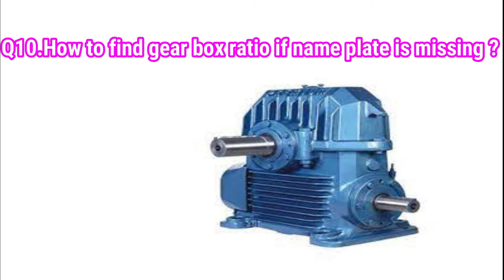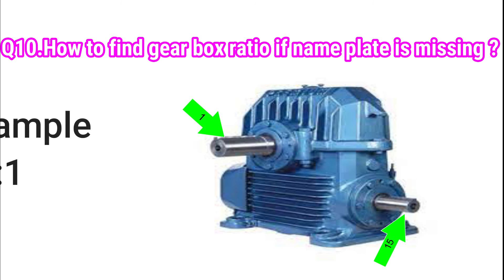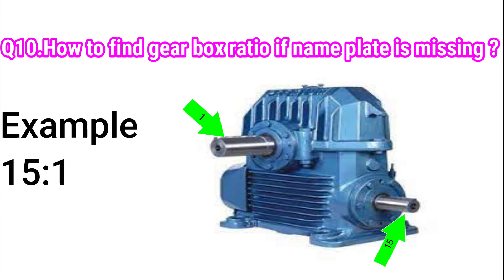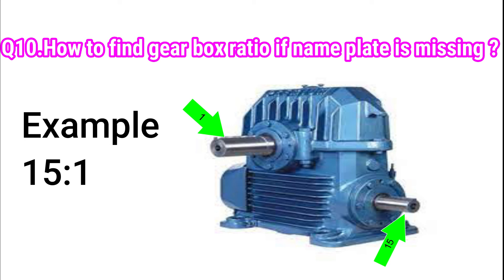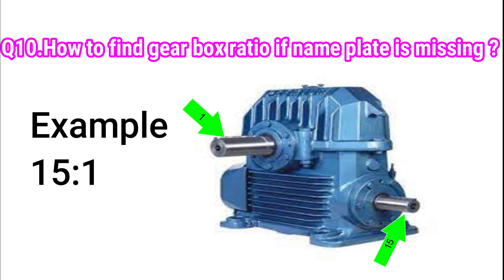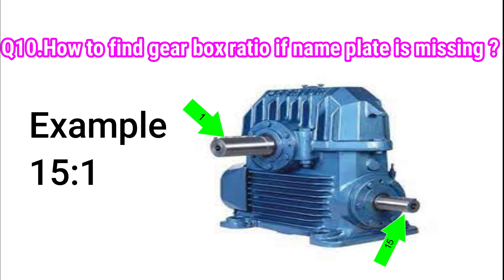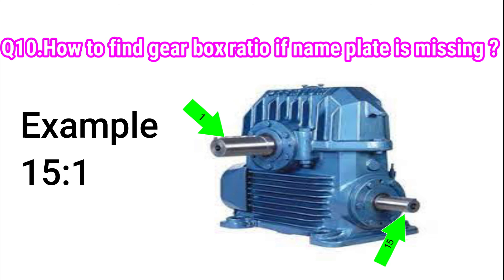The last question is a practical problem seen in industries: how do you find the gearbox ratio if the nameplate is missing? Here, you need to see how many revolutions you obtain for the input shaft for one complete revolution of the output shaft. For example, if you are able to rotate 15 revolutions of the input shaft for one complete revolution of the output shaft, then the gear ratio for that particular gearbox will be 15:1.